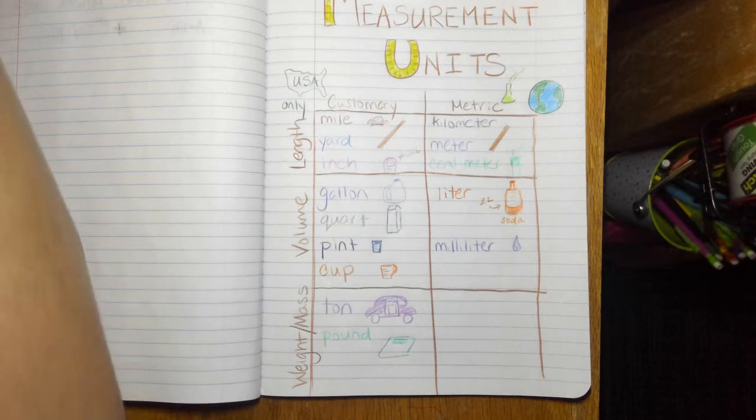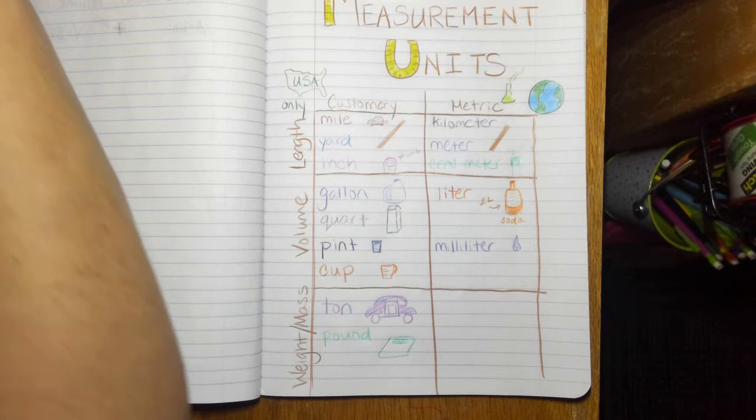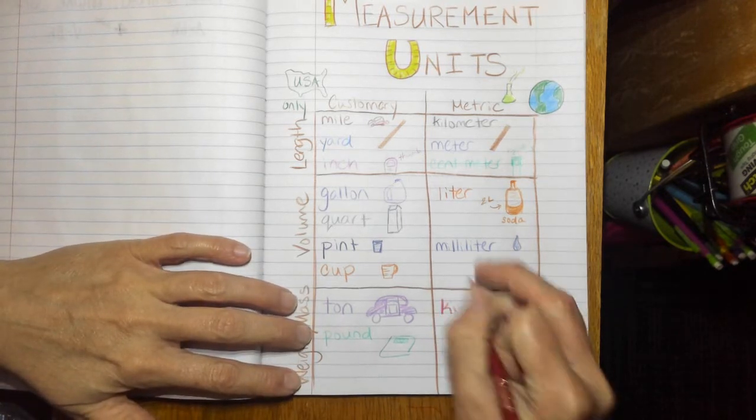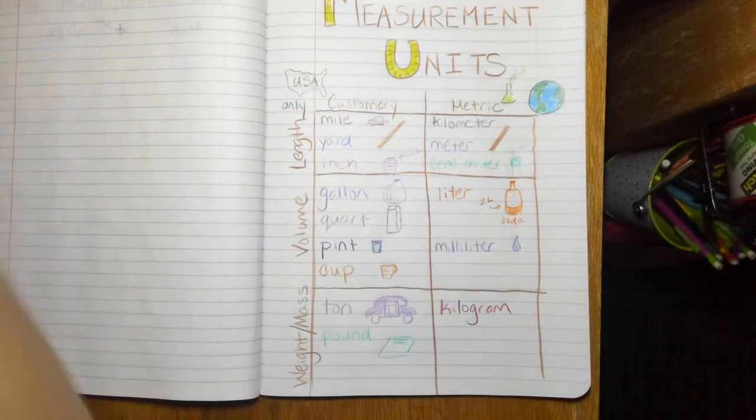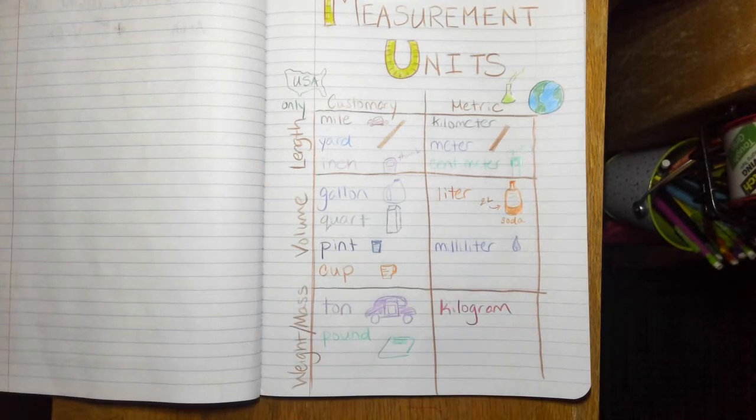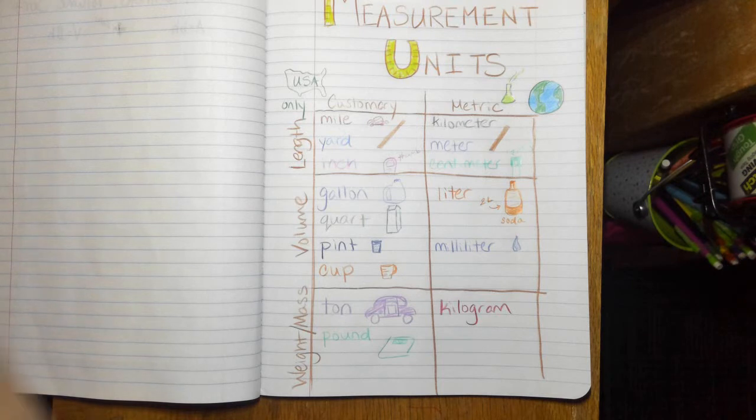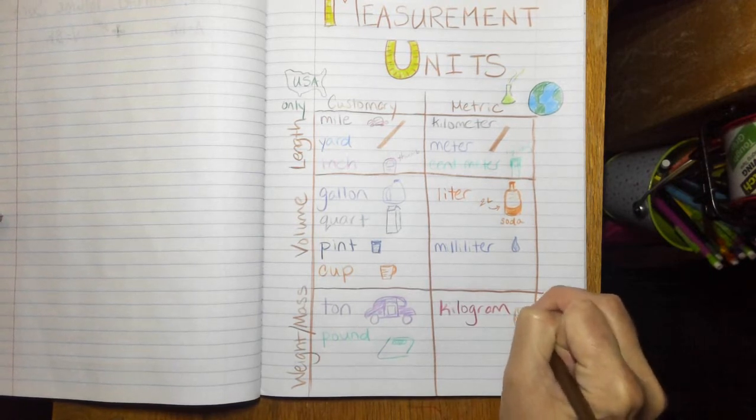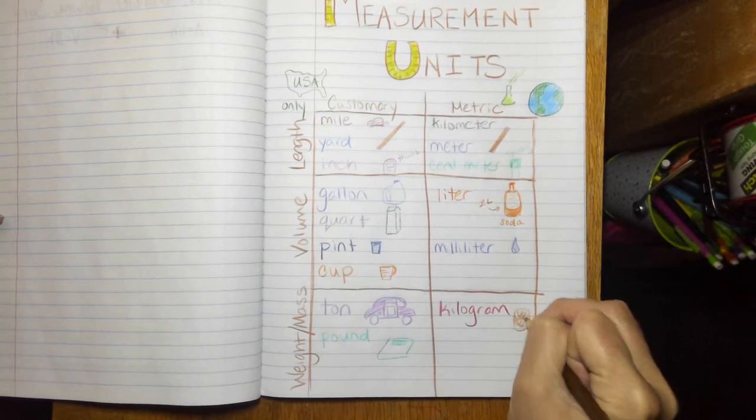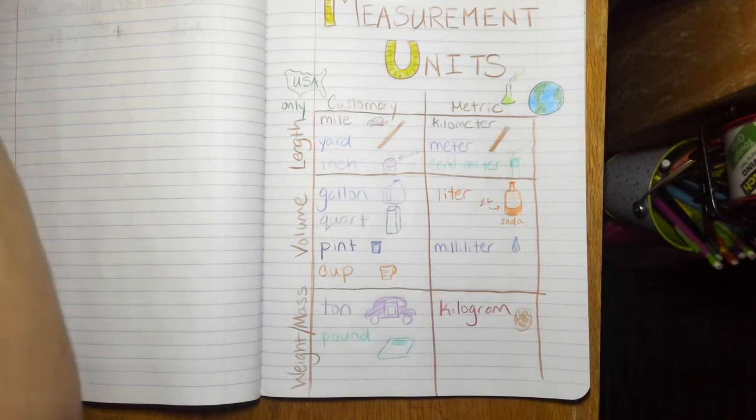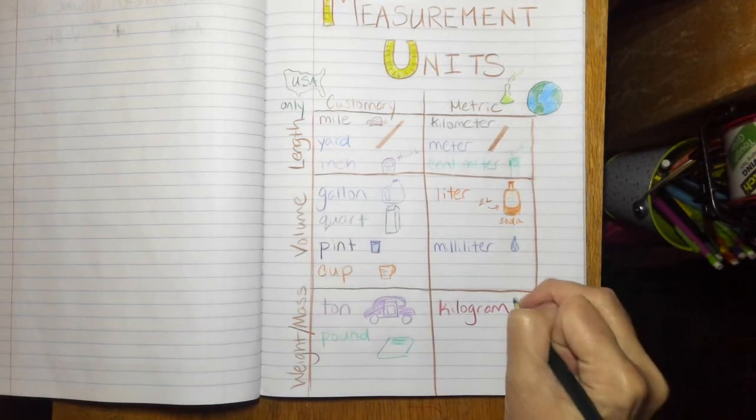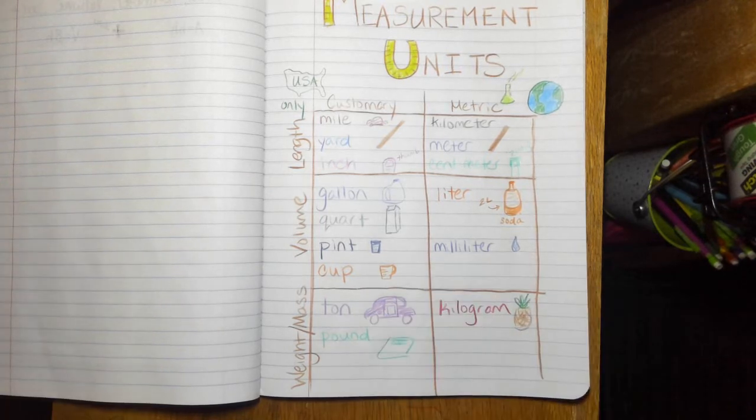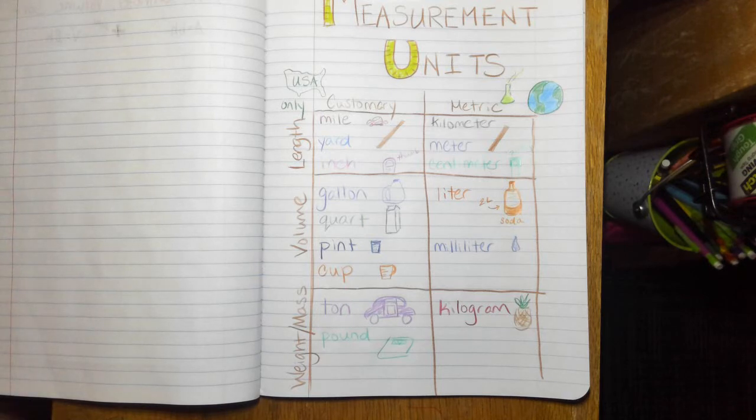So on the metric side we have a kilogram. So let's see, something that weighs about a kilogram, like a pineapple. A kilogram and a pound are pretty comparable, pretty close together in terms of how much each of them actually represents. In fact, give me a second I'll look up which one's bigger. So a kilogram is about two pounds.